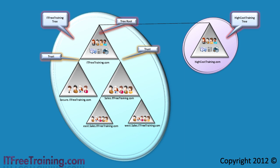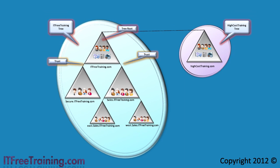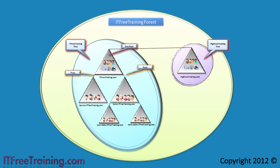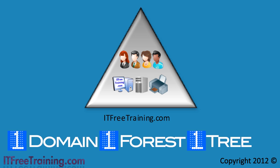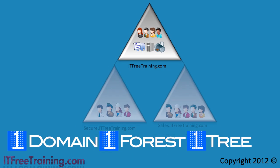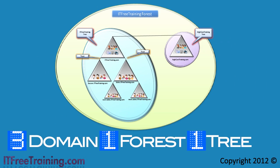So far I have looked at root domains and child domains in a tree, but there is one structure that links all these together called a forest. A forest encases multiple domains and trees into one structure. You don't have to have multiple domains and trees to have a forest. As soon as you create your first domain, a forest is automatically created for that domain. When I added the two child domains to IT Free Training, these now form a tree in the one forest. The high cost training domain is then added and this forms another tree in the same forest.